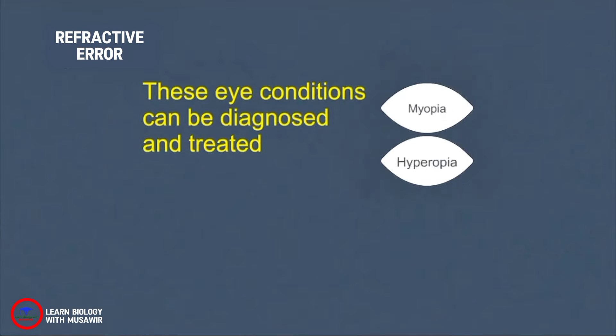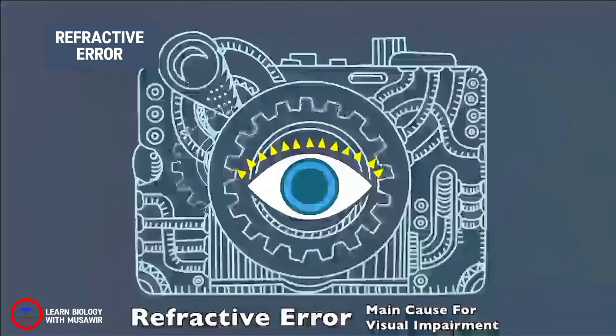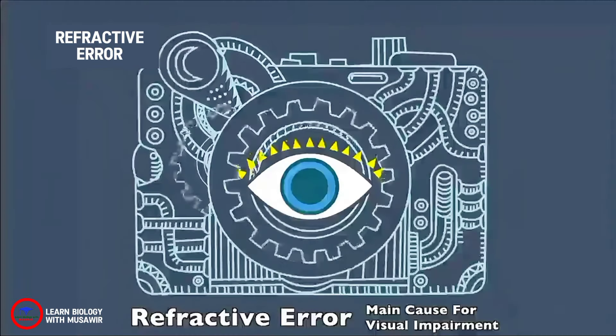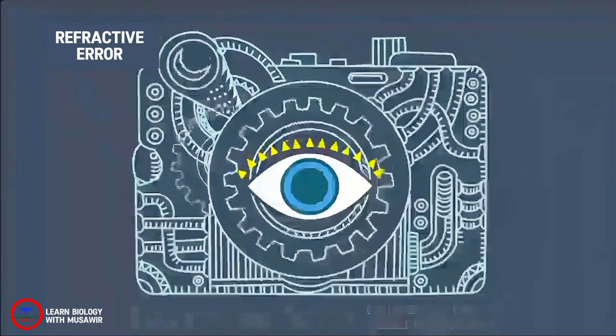These eye conditions can be diagnosed and corrected easily. Still, refractive error remains the main cause of moderate and severe visual impairment among millions of people across the globe.